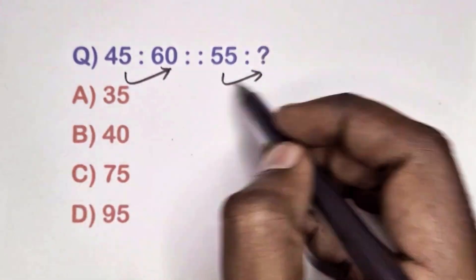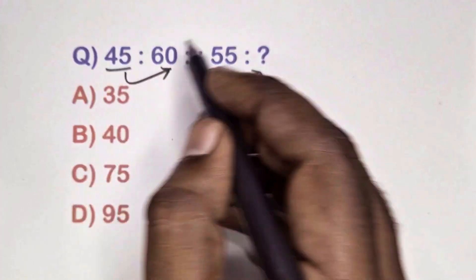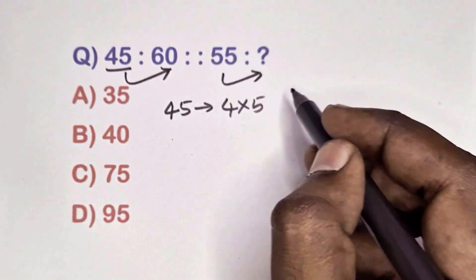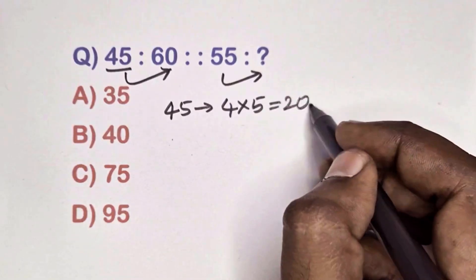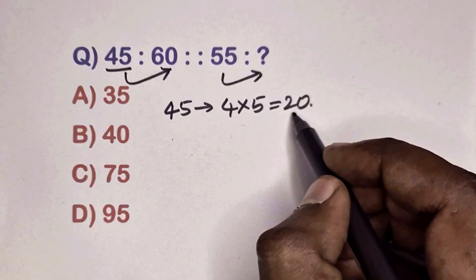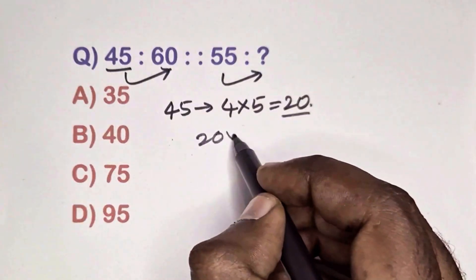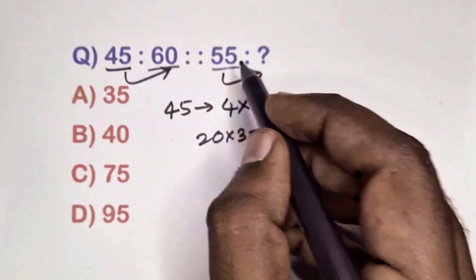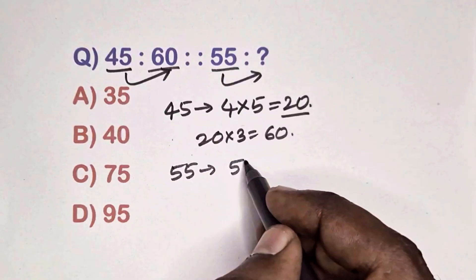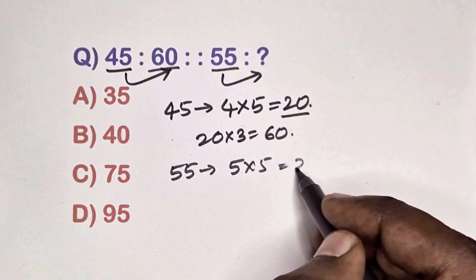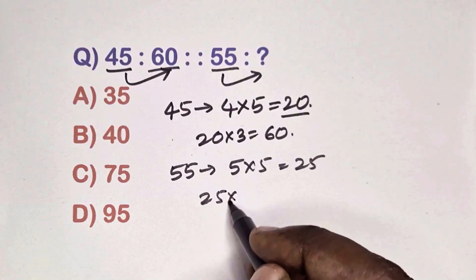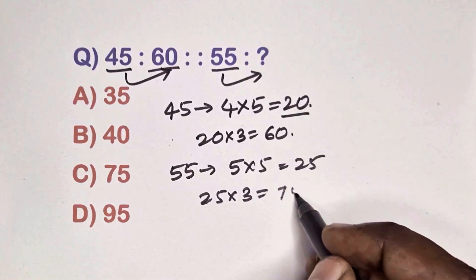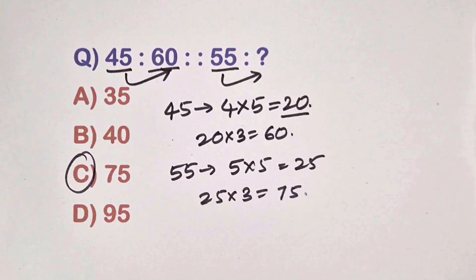Find the relation between this pair of numbers. Take 45: write as 4 times 5 equals 20, then 20 times 3 gives 60. Take 5 times 5 equals 25, then 25 times 3 gives 75. Option C is the correct answer.